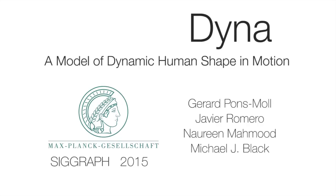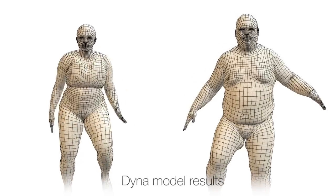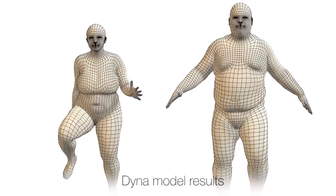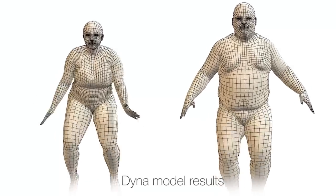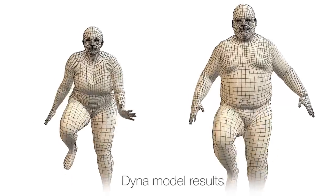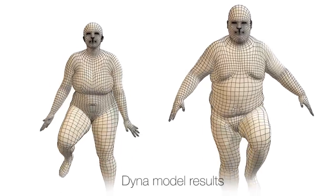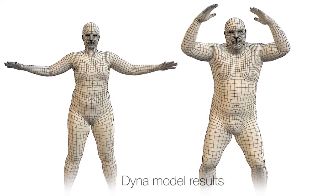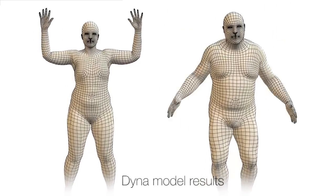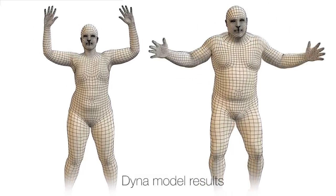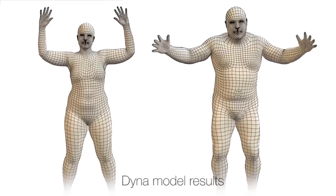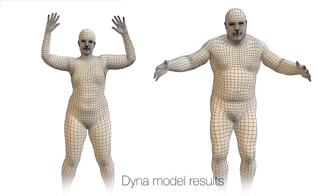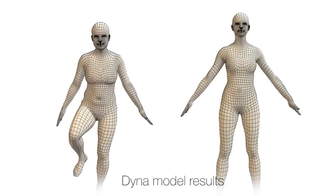Human soft tissue deformations are complex and vary significantly with body shape. Our goal is to create 3D avatars that move and deform as humans do. Dyna is a mathematical model that synthesizes realistic body shape deformations resulting from soft tissue dynamics. Dyna takes a body shape in a sequence of poses as input, and produces life-like mesh deformations as output.